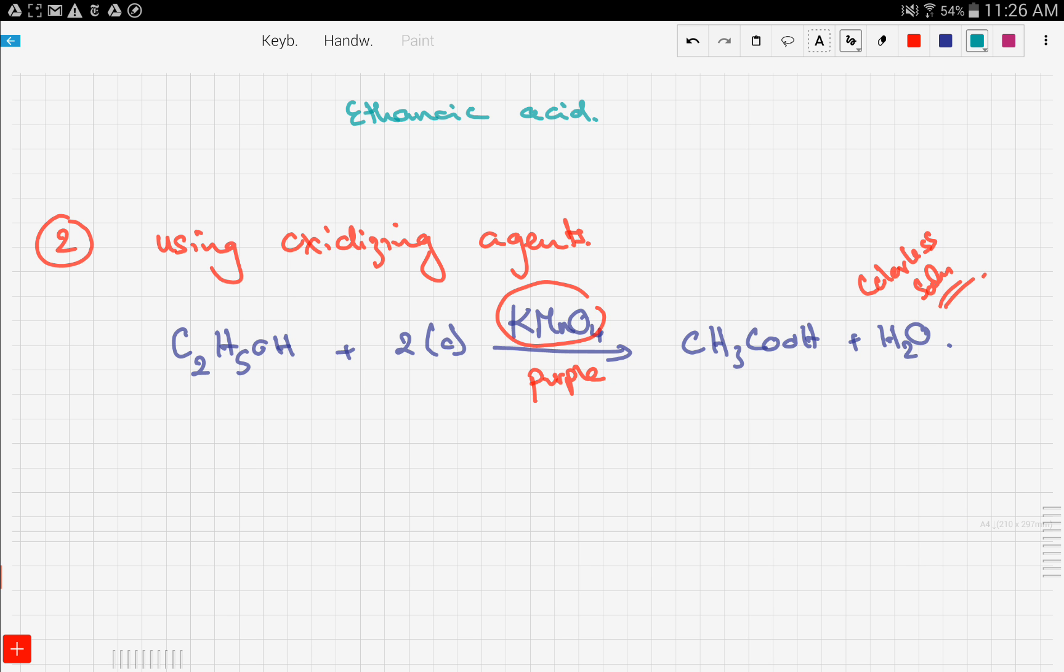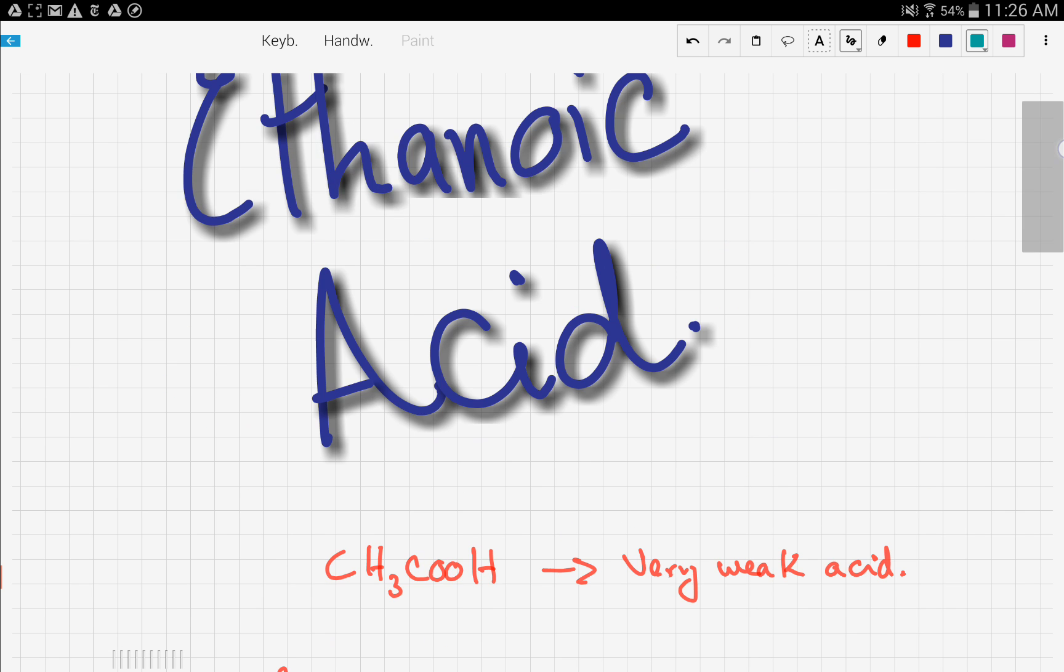The use of oxidizing agents. This is the reaction between an alcohol and an oxidizing agent, in this case potassium manganate, which produces ethanoic acid. That's it for this video. In the next video, we're going to talk about esters. Stay tuned and good luck.